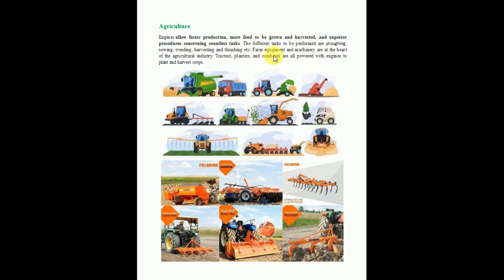Tractors, planters, and combines are all powered with engines to plant and harvest crops. We can see different types of machines — harvesting and transportation machines, ploughing and planting machines, and machines for spraying pesticides and other work. Actual pictures of these machines also show ploughing machines in different forms — these are the different agricultural applications where internal combustion engines run the agricultural machines.